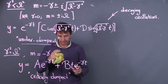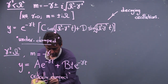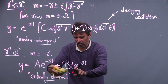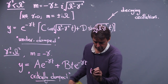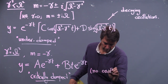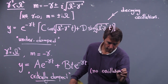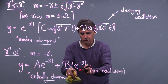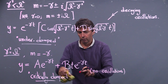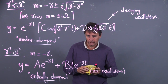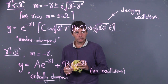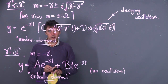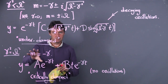The critically damped solution still decays exponentially and doesn't oscillate. The only difference is the extra factor of t in the second term, which means it doesn't decay quite as quickly as pure exponential decay — it's slightly weaker. That's the only characteristic feature of that case.